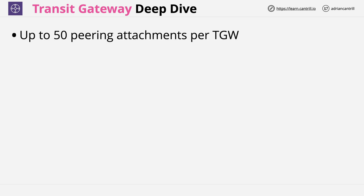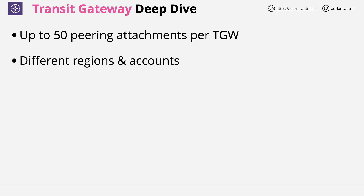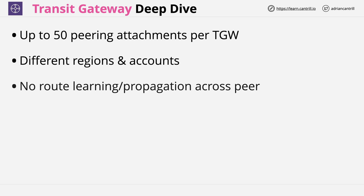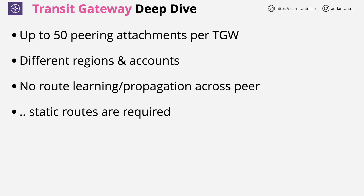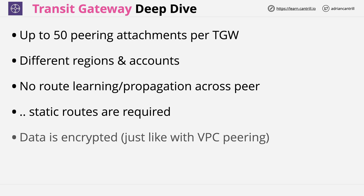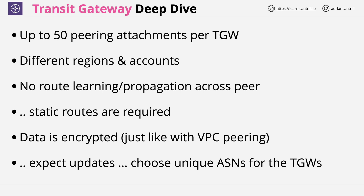You can have up to 50 peering attachments per Transit Gateway, and these can be in different regions and different AWS accounts. The Transit Gateway is not capable of learning or route propagation across a peer, so you can't send automatic route advertisements across an individual peer between two Transit Gateways — you need to use static routes so each Transit Gateway is aware of networks at the other side. Data is encrypted just like VPC peering, and you should always configure unique ASNs for every Transit Gateway.